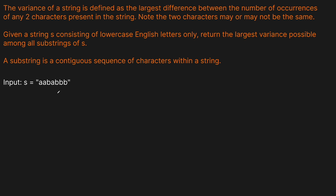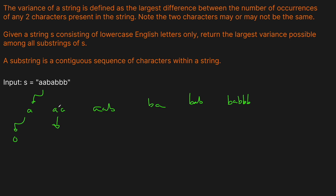Let's think about some of the substrings we can build here. So we could have something like A, AA, AAB, BA, BAB, and B, A, B, B, B. Let's think about the variance. Remember, it's the difference between the count of occurrences of any two characters. For A, obviously there's not two characters, so it's zero. For AA, both A's show up once, so it's one minus one, which is also zero.